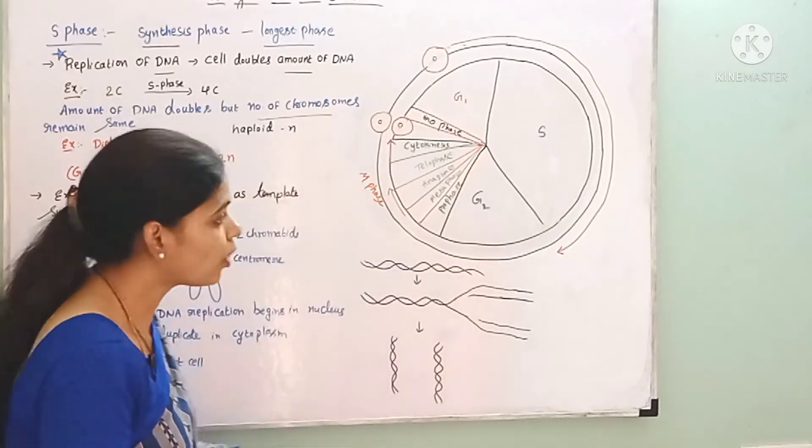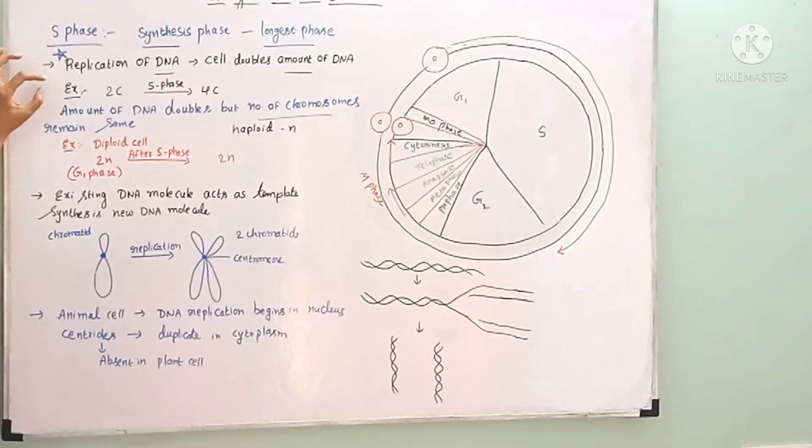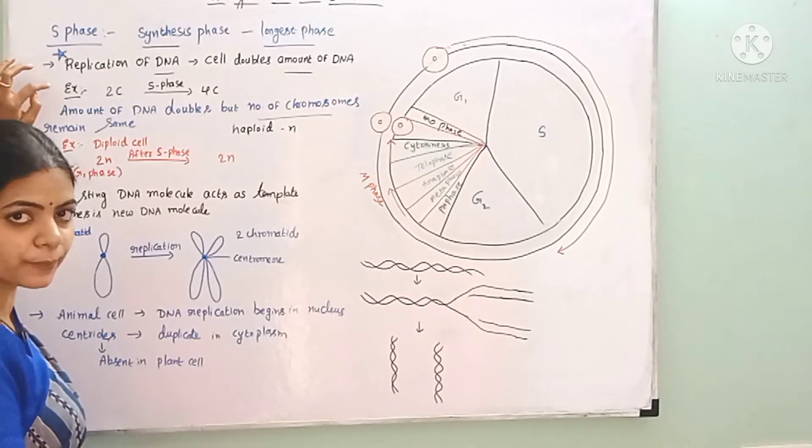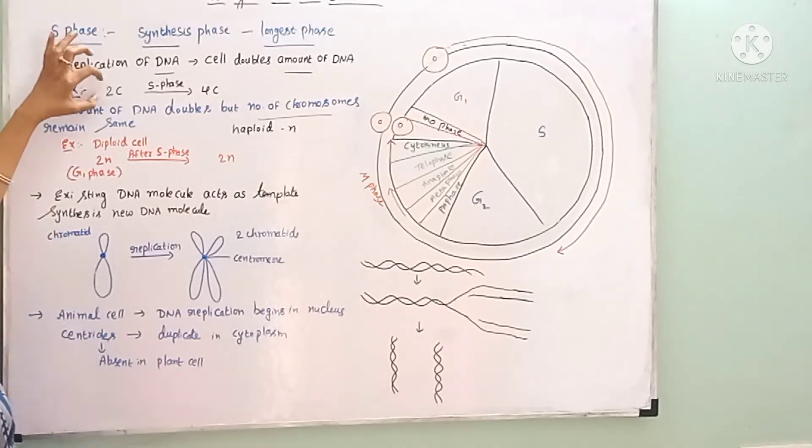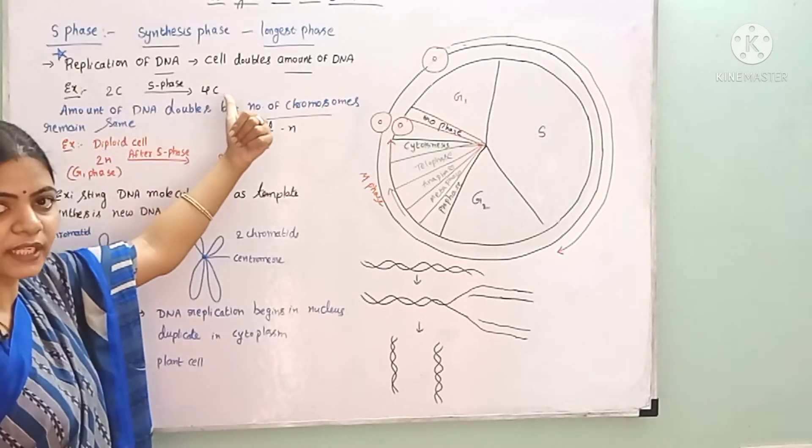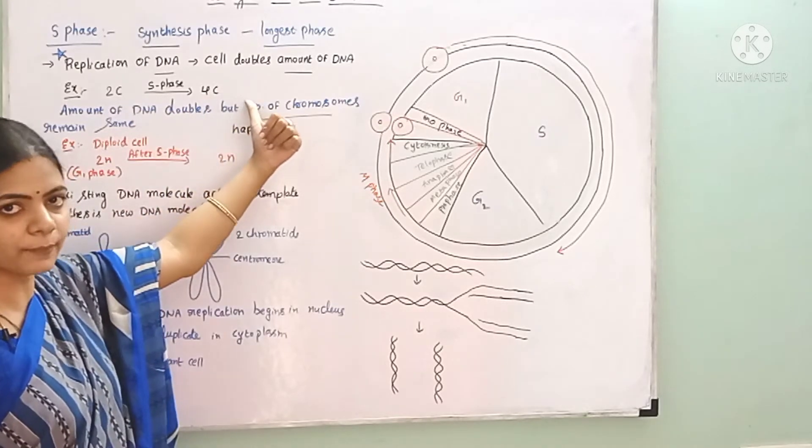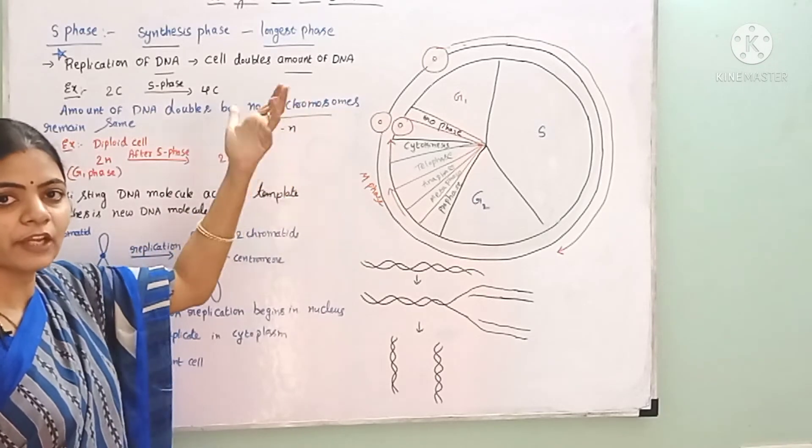For example, if the initial amount of DNA in the cell is 2C, after S phase the amount of DNA becomes 4C. If it is 3C initially, it will become 6C. That means doubling of the DNA takes place.